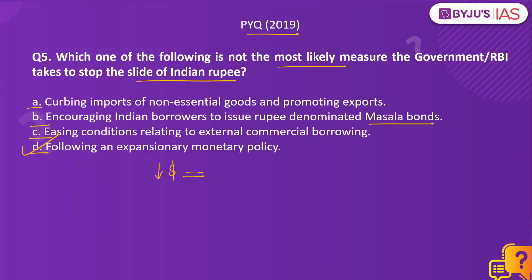Masala bonds are denominated in Indian rupees, so they help reduce the demand for dollars for loan repayment. With an increase in external commercial borrowings, the inflow of dollars and other currencies also increases — therefore helping stop the slide of the Indian rupee. However, when an expansionary monetary policy is followed, it leads to an increase in money supply in the economy — that is, rupee currency supply increases without a corresponding increase in the supply of dollars. As a result, the dollar strengthens and the Indian rupee weakens further. So option D is the right answer.